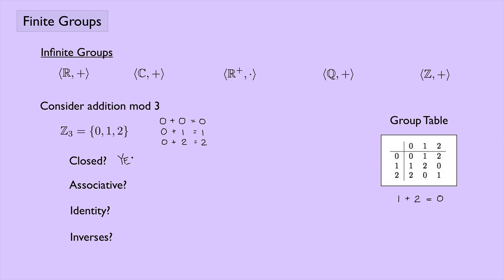Is it associative? In order to be associative, we need to be able to move the parentheses around. We're doing addition mod 3, and we know that regular addition is associative. It turns out addition mod 3 is also associative — it's a little harder to check, but it makes sense since it's very close to regular addition. You could go through all the different possibilities to verify you can move the parentheses around.